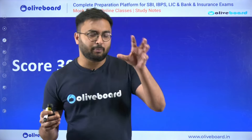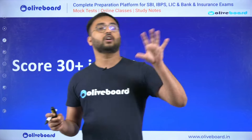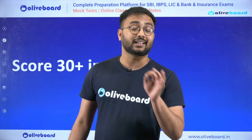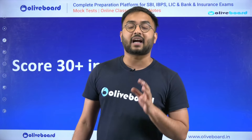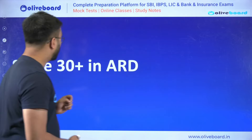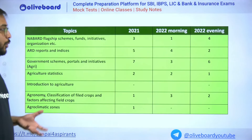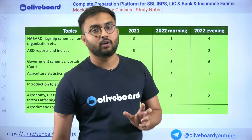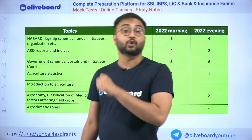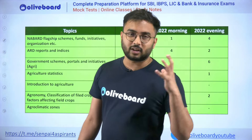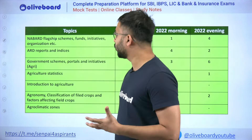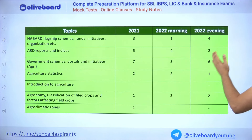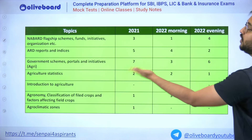I'll give you that magical list of topics which, if you even search on the internet or Wikipedia, will get you 100% 20 plus marks in NABARD ARD. Let's start our discussion. To understand ARD better, we'll begin with the mark distribution. The overall target score for ARD is 30 plus. These are the recurring topics and past year recurring questions from each of these topics. For 2023, I will personally write them down so you remember them better.